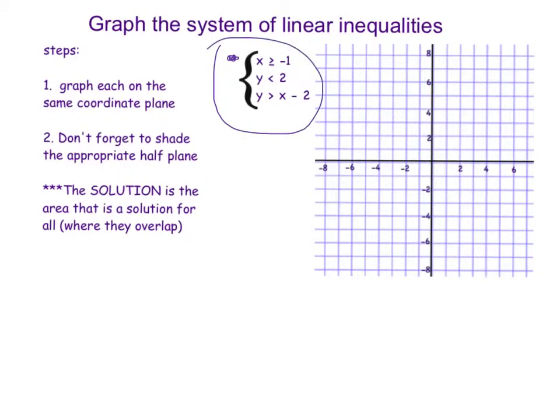The first one says x is greater than or equal to negative one. Now this is a one variable, so we can think like a number line, except we have to do it on a coordinate plane. So we have to go back to what we know about vertical and horizontal lines. x equals negative one was a vertical line going through that point on the x-axis, vertical line going through negative one.